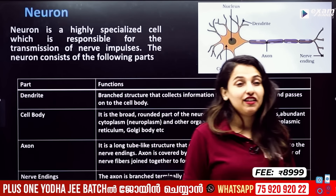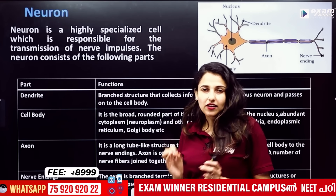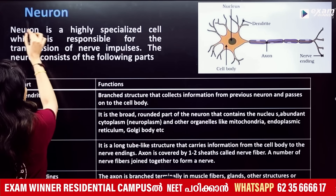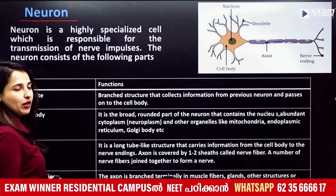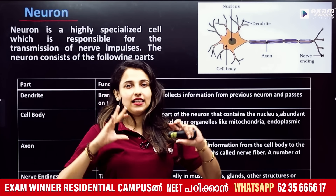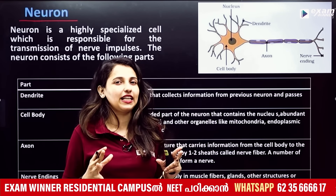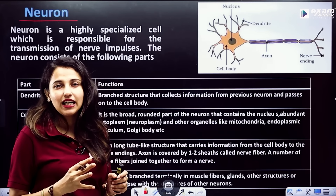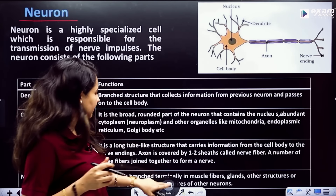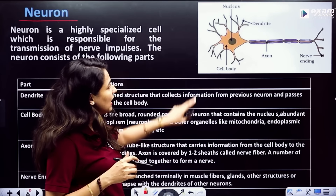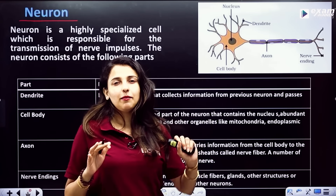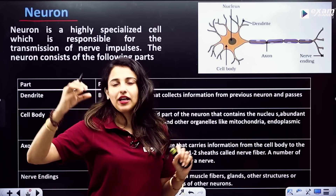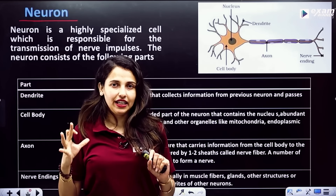What is the basic structural and functional unit? Neurons. Neurons are in the nervous system. Neurons are the basic structure of a nerve cell. A neuron has dendrites, a cell body, an axon, and nerve endings.